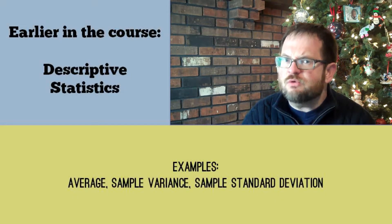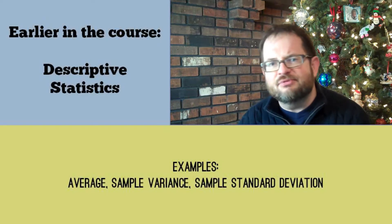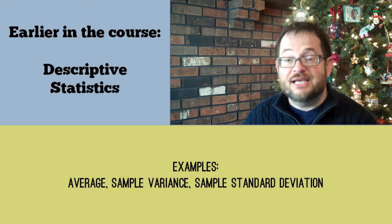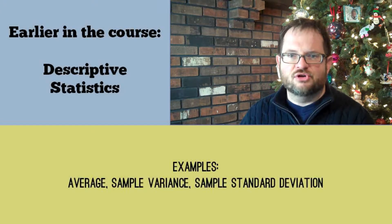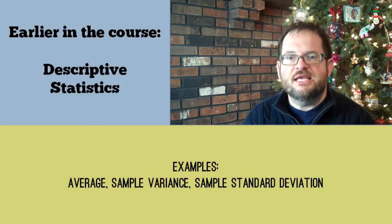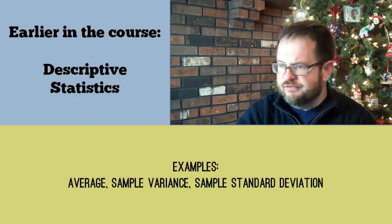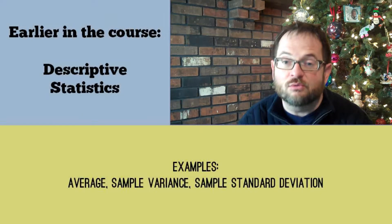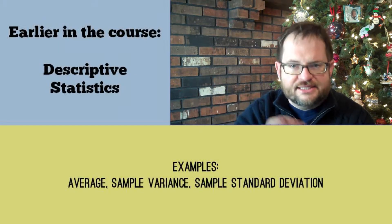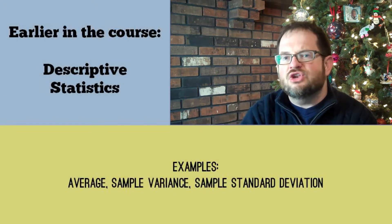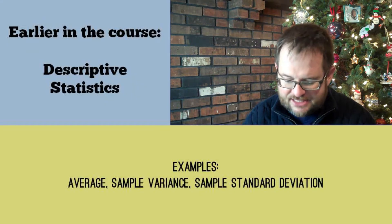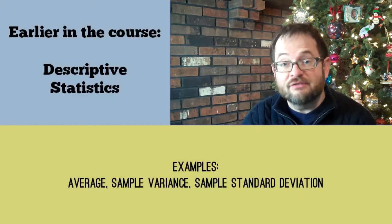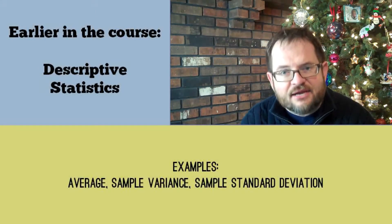Earlier in the course a lot of what we were doing was called descriptive statistics. Examples include quantities like the average, the sample variance, or the sample standard deviation. Notice that this is all different than parameters. Parameters were actual properties of the system, like the mean, or the variance, or the standard deviation — properties of the climate, or the electrical grid, or the community consuming electricity. There is a real mean temperature in Omaha on this day, but that's not something we can know. That's a parameter. We can come up with estimators of that parameter that we called statistics, like average, which is an estimator of the mean, or sample variance, which is an estimator of the real variance, or sample standard deviation, which was an estimator of the real standard deviation.